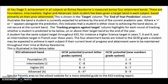Each student is given a target band in each subject, based primarily on prior attainment at Key Stage 2. This table shows how the old A* to G GCSE system equates to the new numerical GCSE grades 9 to 1. GCSE grades from 2017 will be graded 9 to 1 in Mathematics and English, and in all other subjects from 2018.